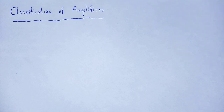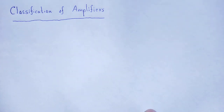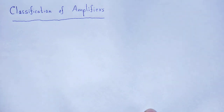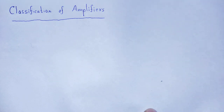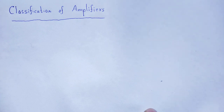Amplifiers are basically used in an electronic circuit to amplify the signal. That signal may be voltage, current, or power. Whatever may be the signal, when an amplifier is used in an electronic circuit, it amplifies the input signal.